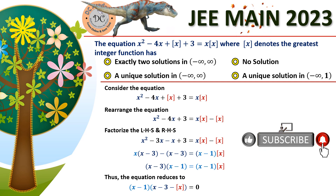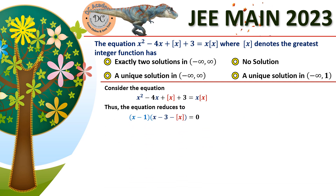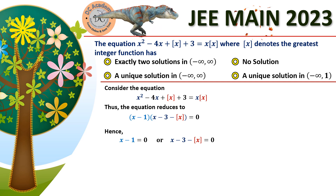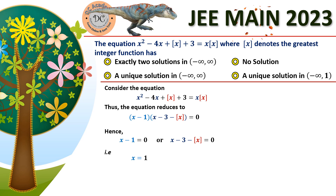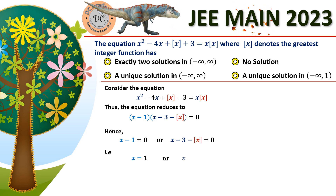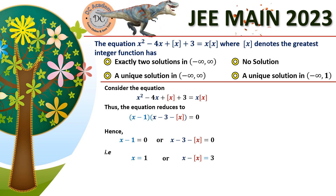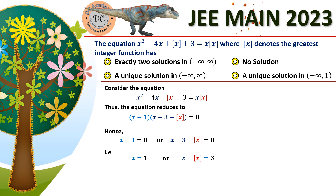From the factorized form, either (x minus 1) equals zero, or (x minus 3 minus box(x)) equals zero. The first case gives the simple root x equals 1, which is an obvious solution. We now need to test whether any real x satisfies x minus box(x) equals 3 in the second case.